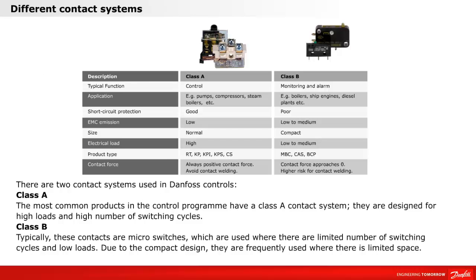There are two contact systems used in Danfoss controls: Class A and Class B. The most common products in the control program have a Class A contact system. They are designed for high loads and a high number of switching cycles. Typically, the Class B contacts are micro-switches, which are used when there is a limited number of switching cycles and low loads. Due to the compact design, they are frequently used where there is limited space.